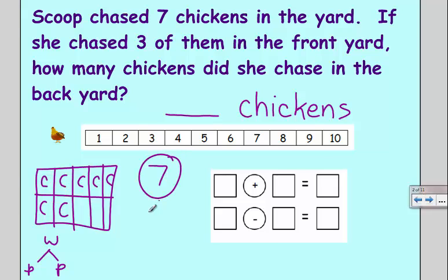What I'm looking for is I know one part is three, and I need to find the missing part. In my equation, what I'm really looking for is I know three from my front yard plus I don't know from my backyard makes seven.